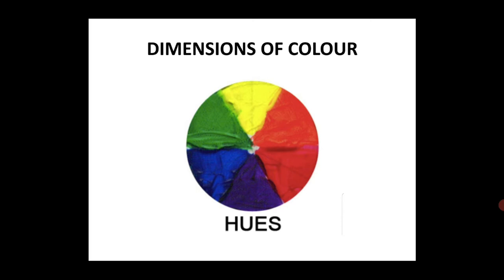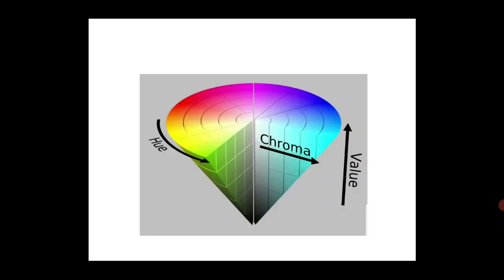Now, just as we measure any other entity, we also measure color. We have units to measure color, and we call them hue, chroma, and value. Hue is a simple term — it is just the type of color that we see. It can be red, blue, yellow, orange — anything. So hue is the basic type of color.